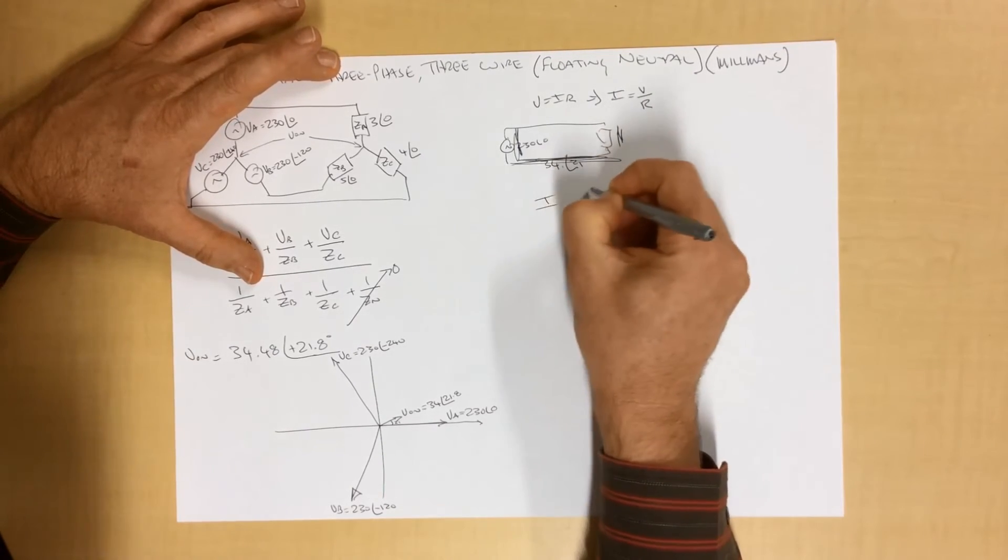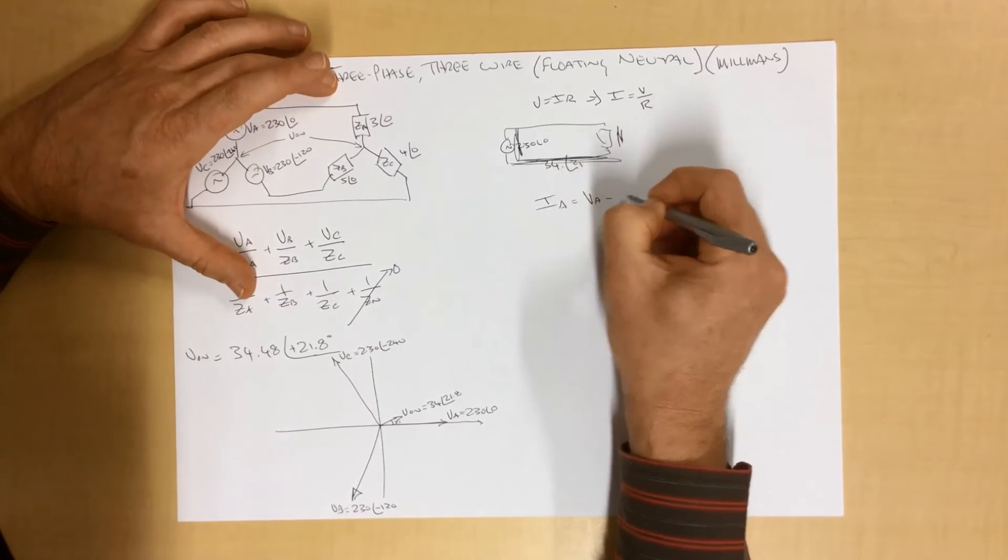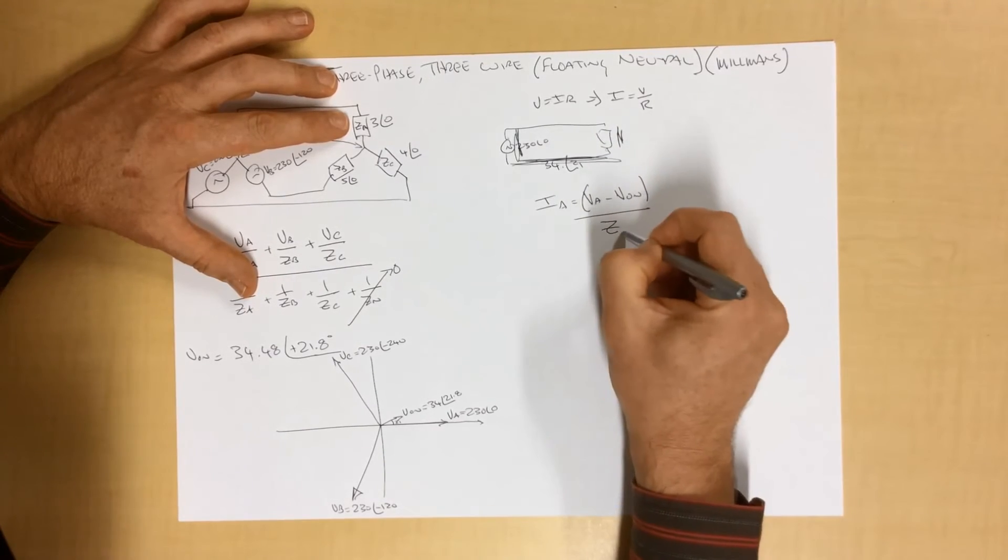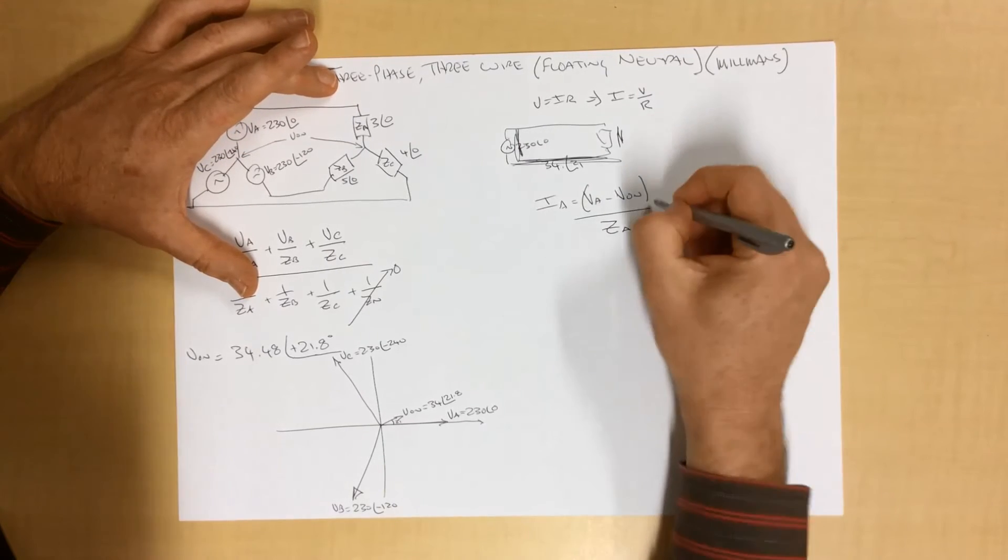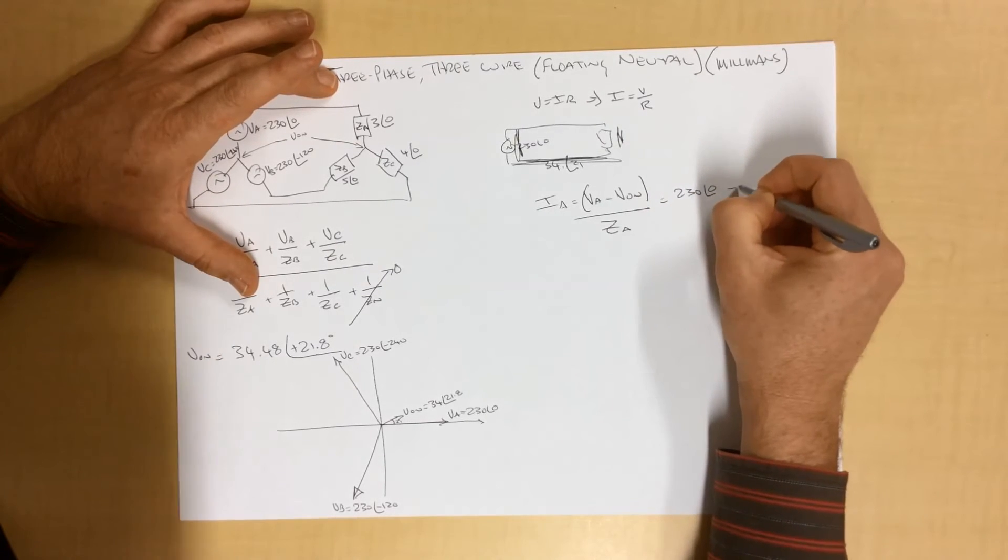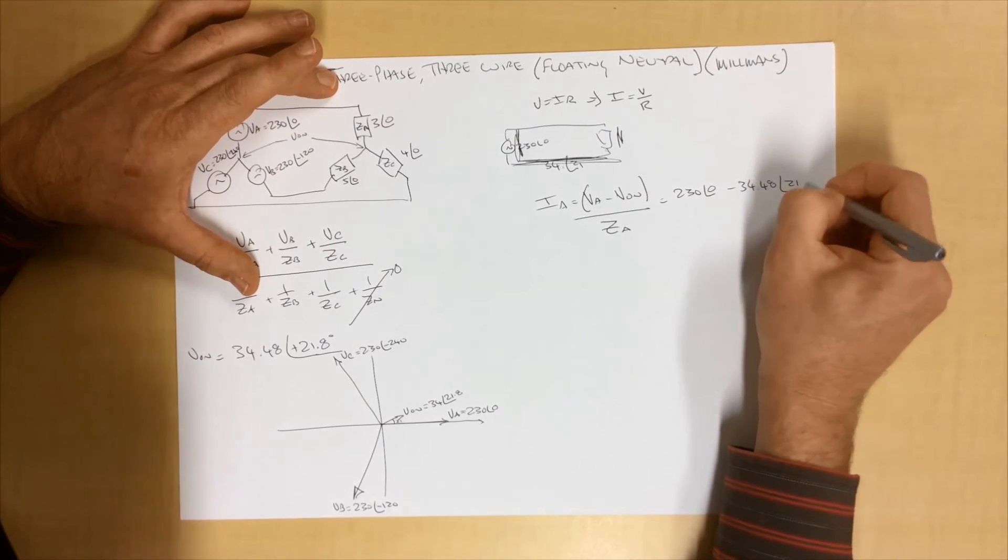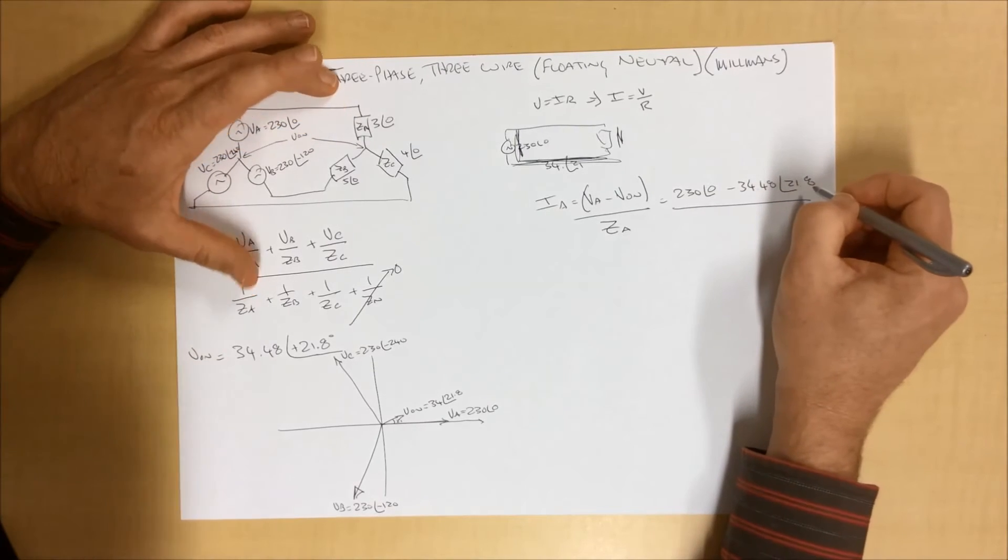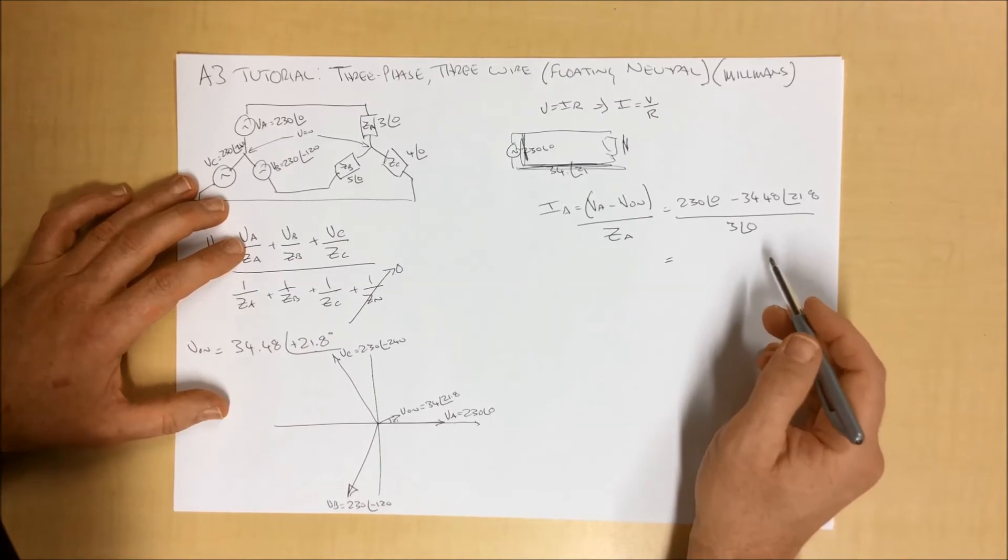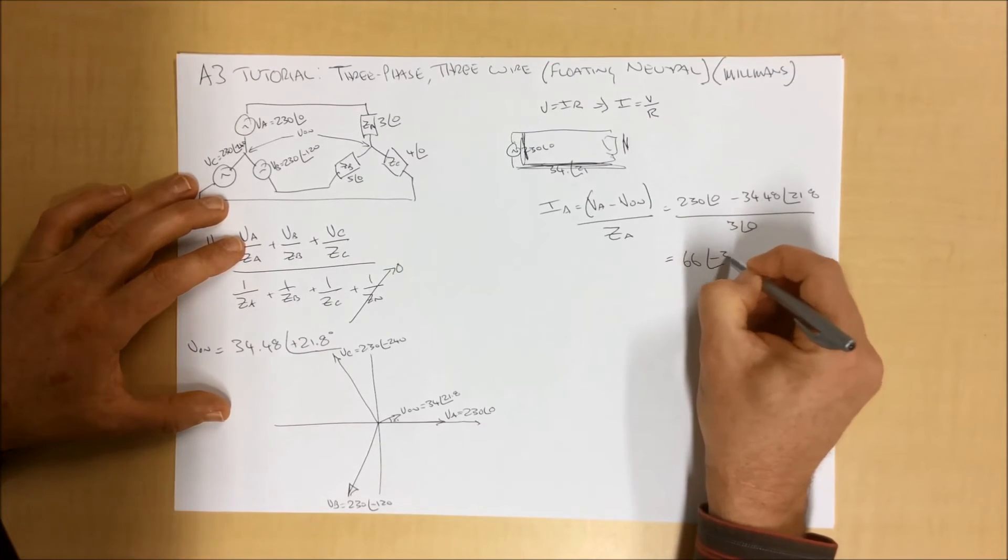So we can see that the current through phase A here is the difference between these two voltages, VA minus VON, over our impedance. 230 at an angle of zero, minus 34.48 at an angle of 21.8, divided by our impedance of three at zero. We can then use our rectangular polar conversion to solve this. And we come up with a solution of 66 amps at an angle of minus three degrees.